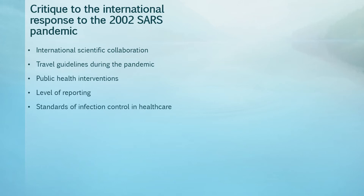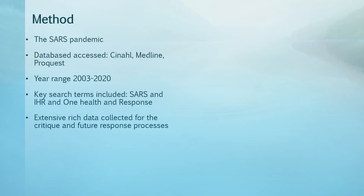The aim of this presentation is to critique the international response to the 2002 SARS pandemic. Key aspects that will be critiqued include the collaboration of the international scientific community, the travel guidelines, the level of reporting, and the standard of infection control processes within healthcare. The method was performed by searching the following databases: CINAHL, MEDLINE and ProQuest, using keywords including SARS, international health regulations, One Health and Response, with a date range between 2003 and 2020. This search method allowed me to retrieve data-rich information to perform my critique and gather information for future response mechanisms to pandemics.